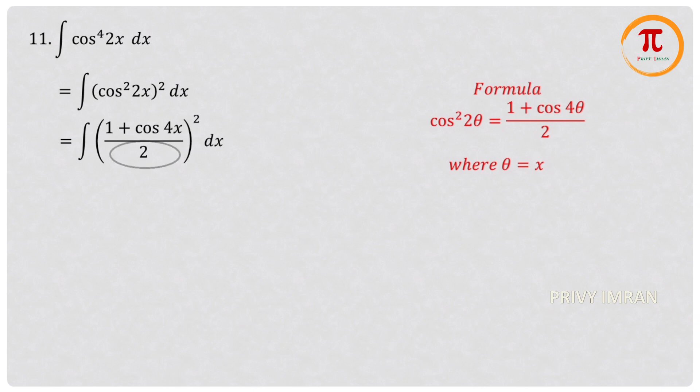Now if you observe here 1/2, 2 squared value is 4, so let me write it outside. It can be written as 1/4. And again in the numerator it is in the form of (a+b)² where a = 1 and b = cos4x. Now let me implement in my next step.